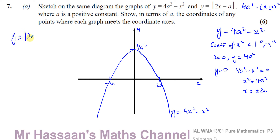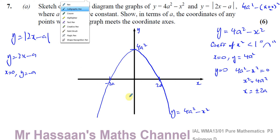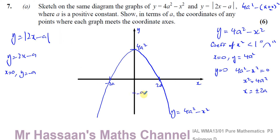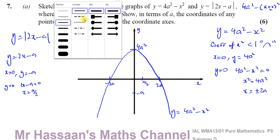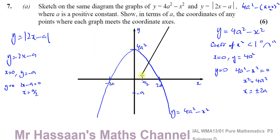Now we've got y equals the modulus of 2x minus a. To draw this, start with y equals 2x minus a without the modulus. When x equals 0, y equals minus a. And when y equals 0, we solve 2x minus a equals 0, giving x equals a over 2. So without the modulus it would go through minus a on the y-axis and a/2 on the x-axis — a straight line with positive gradient.